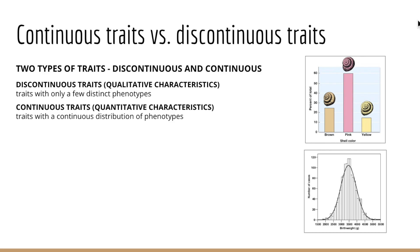In contrast, qualitative traits — or discontinuous traits — are those where the relationship between genotype and phenotype is much more straightforward. Each genotype produces a single phenotype, and most phenotypes are encoded by a single genotype. That is what we considered when we looked at Mendel's pea experiments, and unfortunately it isn't something we see all that often in humans and in nature.